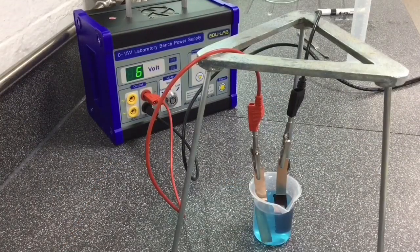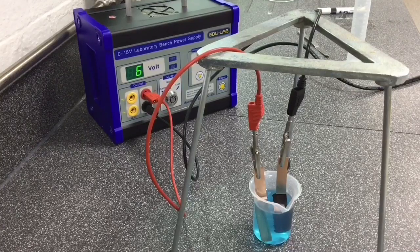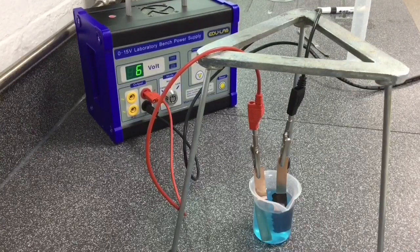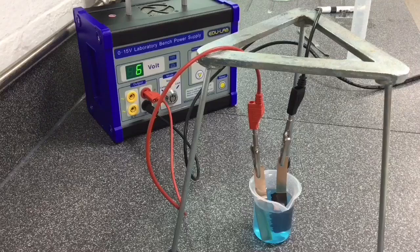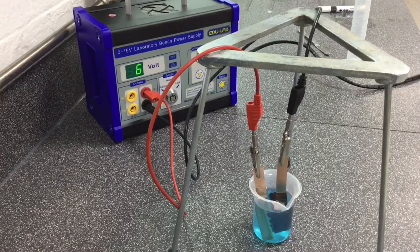When the electrodes are placed into the copper sulfate solution you can see the electrolysis process begin. This is evident when you look at the cathode which is represented by the black wire. Here you can see the build-up of copper.